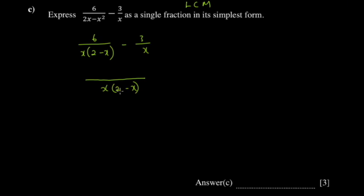So this gives us our lowest common multiple or common denominator. Into the first term you get 1 multiplied by 6, giving 6. Into the second term you get 2 minus x. Put negative 3 on top as it was already there, then since x and x cancel, we get 2 minus x. Put this in brackets, because you need to be mindful of the signs.